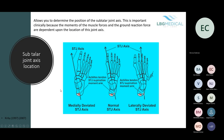Moving on to subtalar joint axis location. This allows you to determine the position of the subtalar joint axis, which is important clinically because the moments of muscle forces and ground reaction force are dependent on the location of the joint axis. A normal subtalar joint axis comes between the first and second metatarsals medially, and more towards the lateral side of the foot laterally.